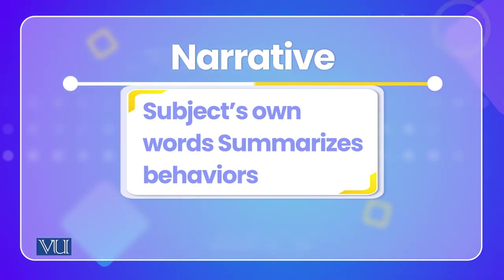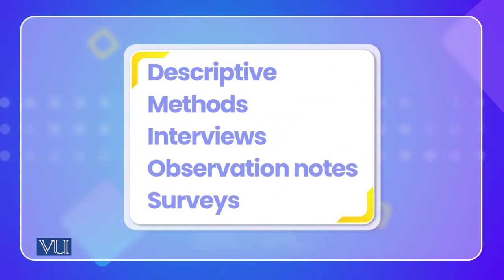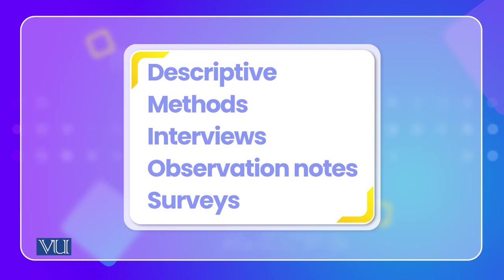The output of qualitative research is a narrative — a story told in the participant's own words, describing what they felt. That narrative summarizes all those behaviors. This research is descriptive, and uses different methods such as interviews, observations, field notes, and sometimes surveys.